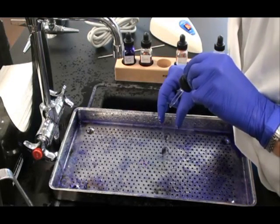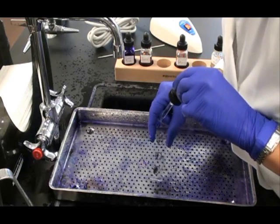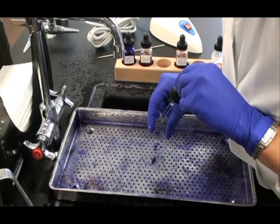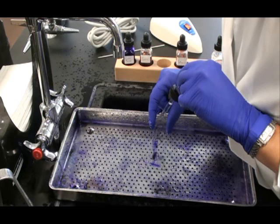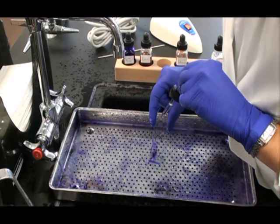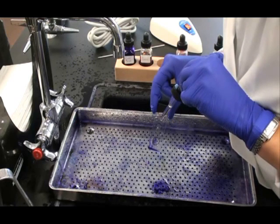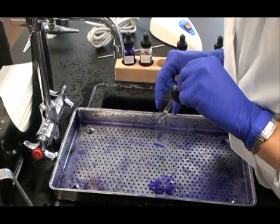I like to hold my slide at an angle vertically and drip that decolorizer down the slide. That way I can see the color being removed from the Gram negative bacterial smear. And then I know things are working right. So I let that drip for 10 to 15 seconds and watch that color leave the Gram negative control.